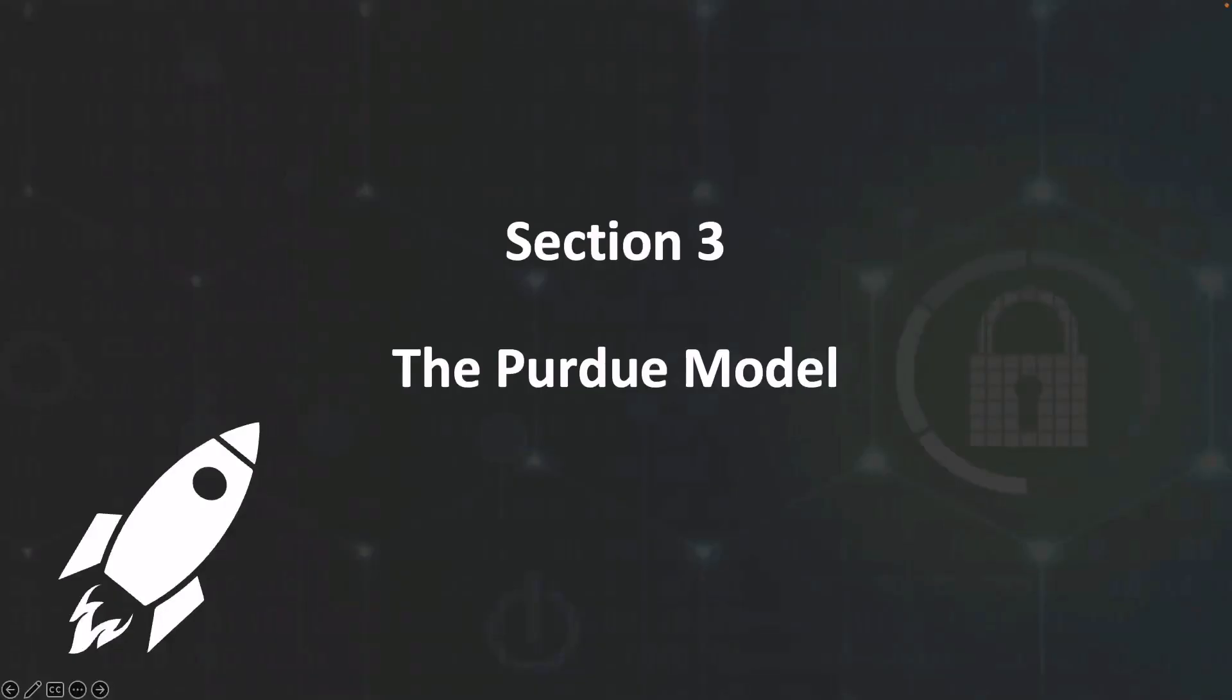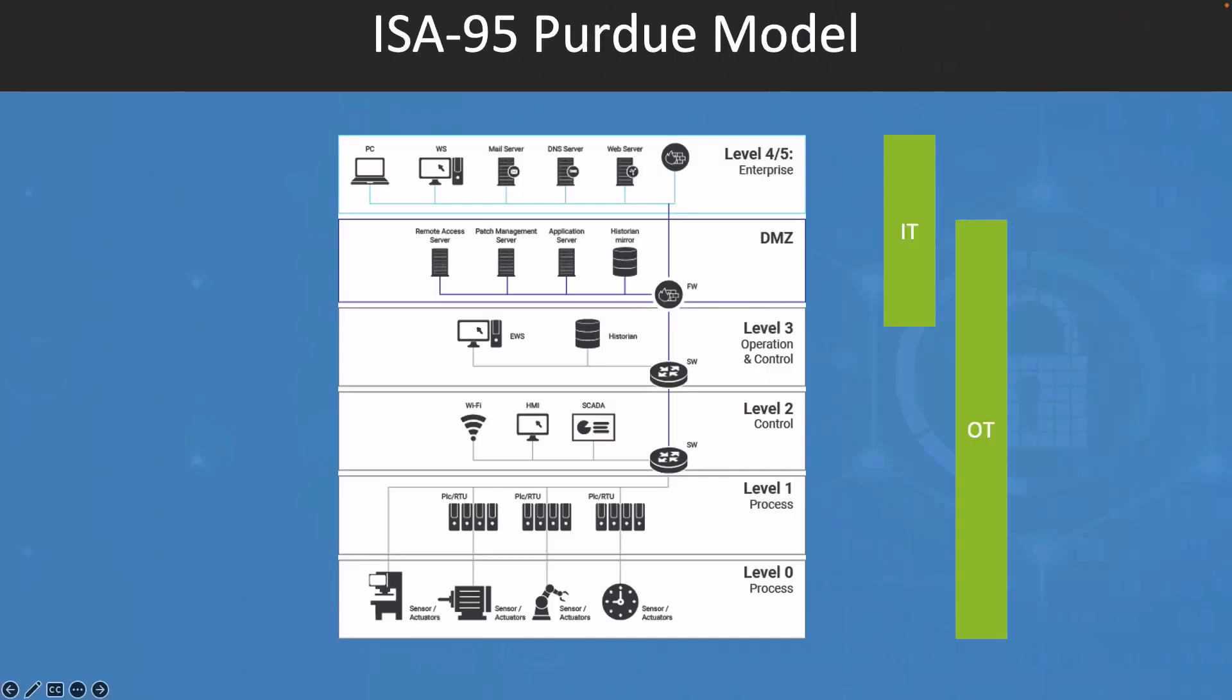Let's define the Purdue model. The Purdue model, also known as the Purdue Enterprise Reference Architecture, is a framework that is widely used in industrial control systems to help organize and describe the different levels and functions of an industrial control system. The Purdue model is based on a hierarchical structure with each level having a different set of functions and responsibilities.